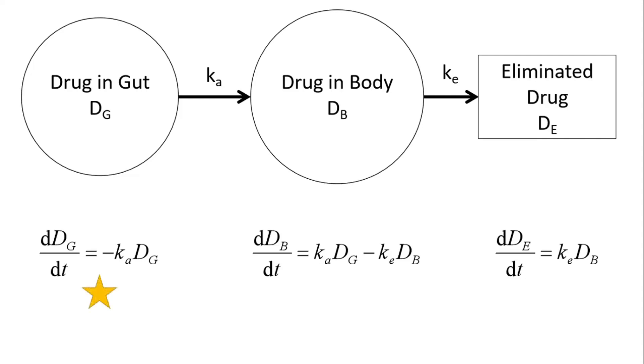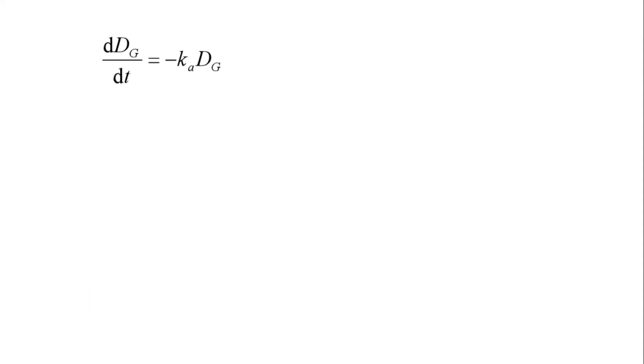Now, in order to solve this system of equations, we first look at this very first one. Very easy. We can just move around some variables, divide both sides by a negative KA DG, and then also multiply both sides by DT. Next, we can finally integrate with respect to DG and with respect to time. We have to choose our limits of integration very carefully because that will impact the later results.